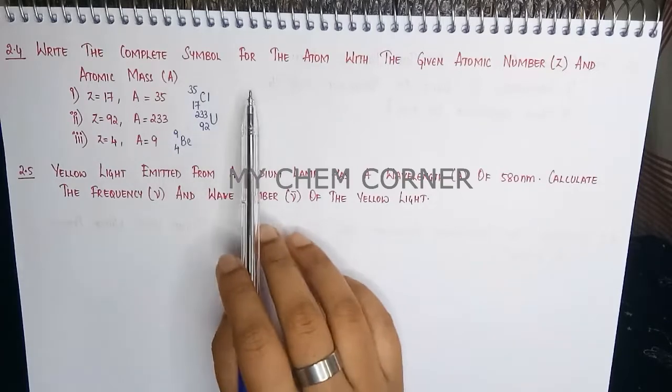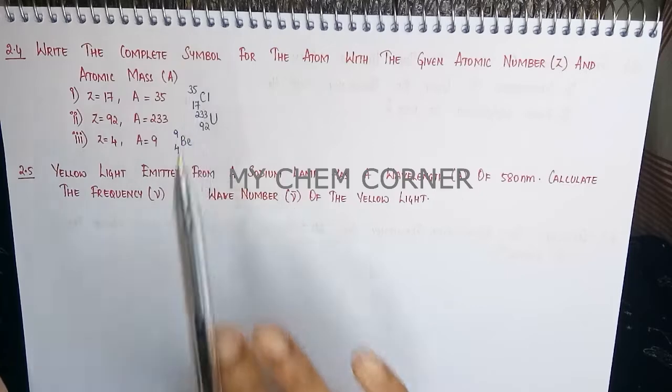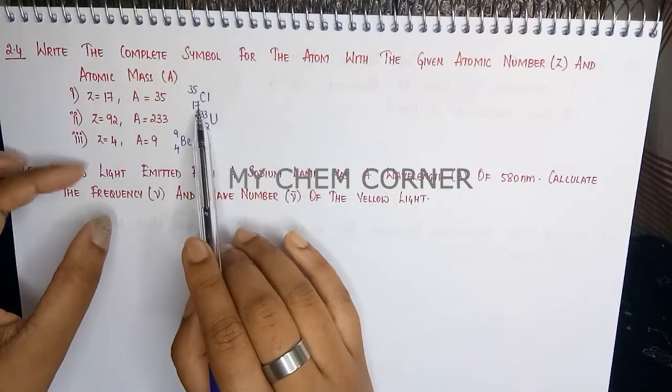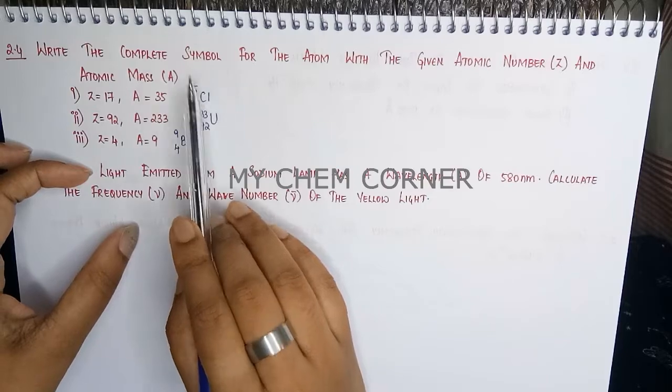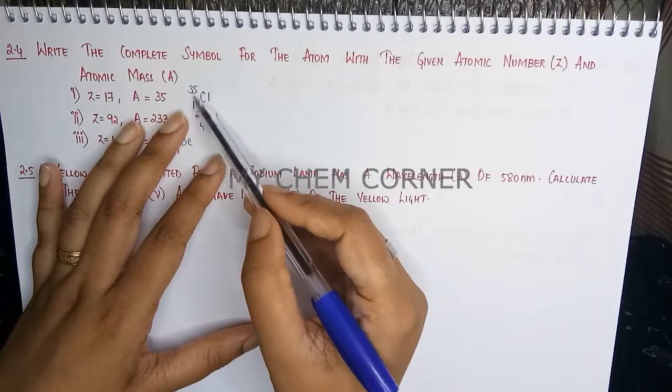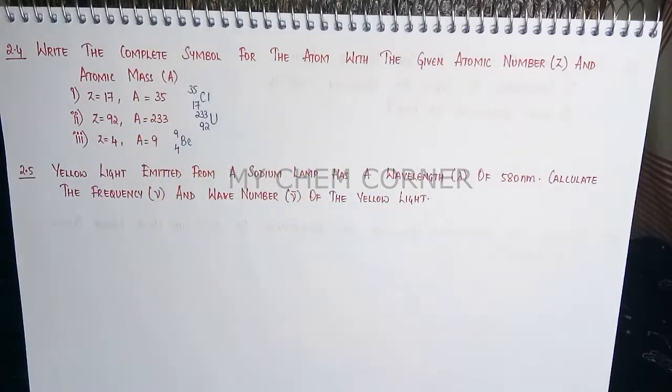Here the question clearly says complete symbol. Complete symbol, which means when I look at that symbol, I should get information completely about atomic number and atomic mass, not just writing the symbol by itself. You should also give all these information. For a complete symbol, you should also give everything.